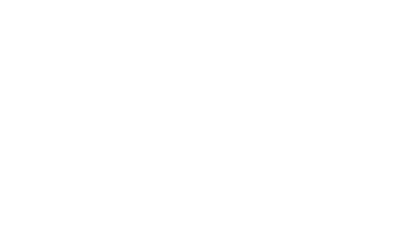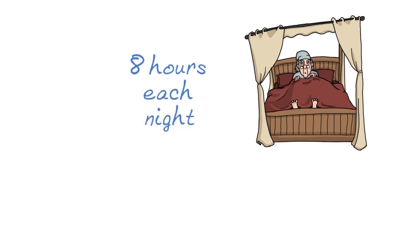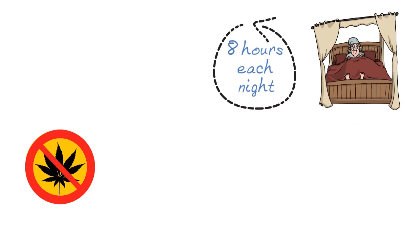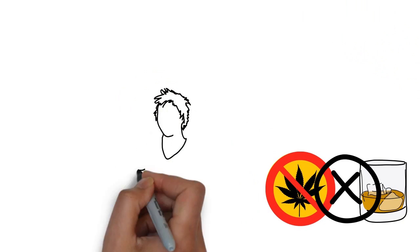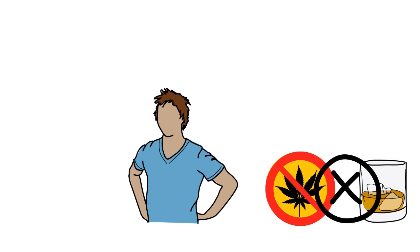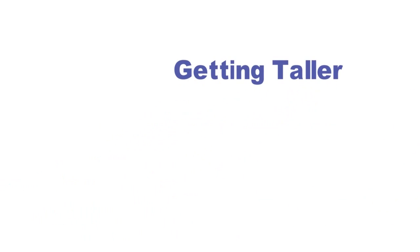Get enough sleep by sleeping at least eight hours each night, avoid drugs and alcohol which can stunt growth, and improve your posture so you won't have any ill effects on your growing spine. You can get taller through surgery.